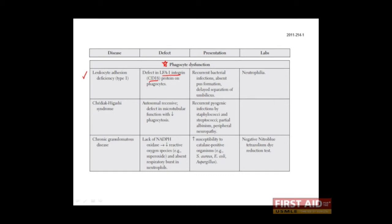When there is a defect in the LFA1 integrin, neutrophils are poorly recruited to sites of infections, which results in recurrent infection with bacteria. Notice that these infections are devoid of pus.